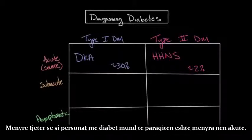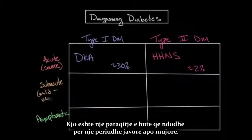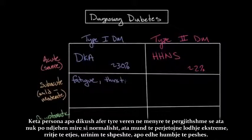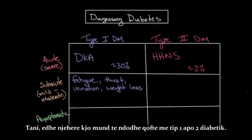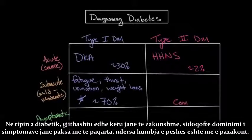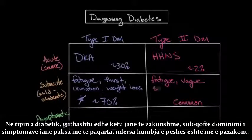The next way individuals with diabetes can present is subacute — a mild to moderate presentation that occurs over a period of weeks to months. These individuals, or someone close to them, notice they are generally not feeling as well as normal, and may experience fatigue, increased thirst, frequent urination, or weight loss. This is the most common form of presentation in type one diabetes, accounting for about 70% of individuals. In type two diabetes it is also common, however the symptoms are more vague and weight loss is less common.